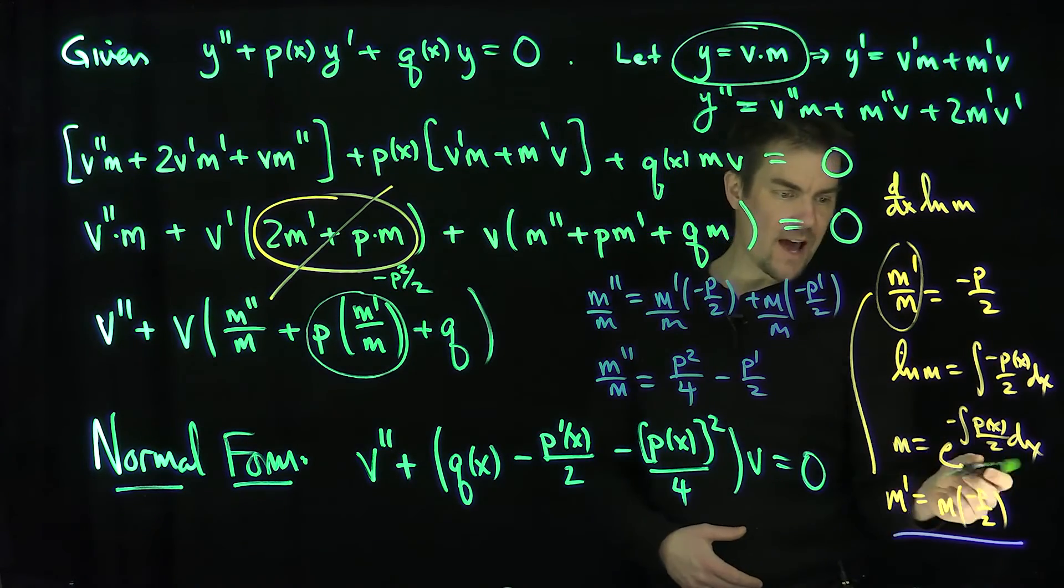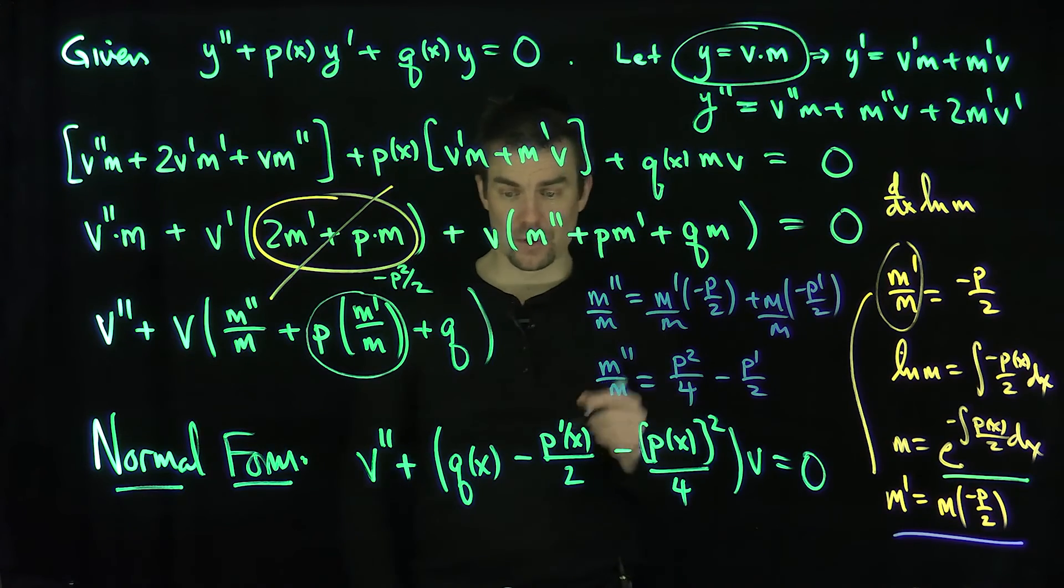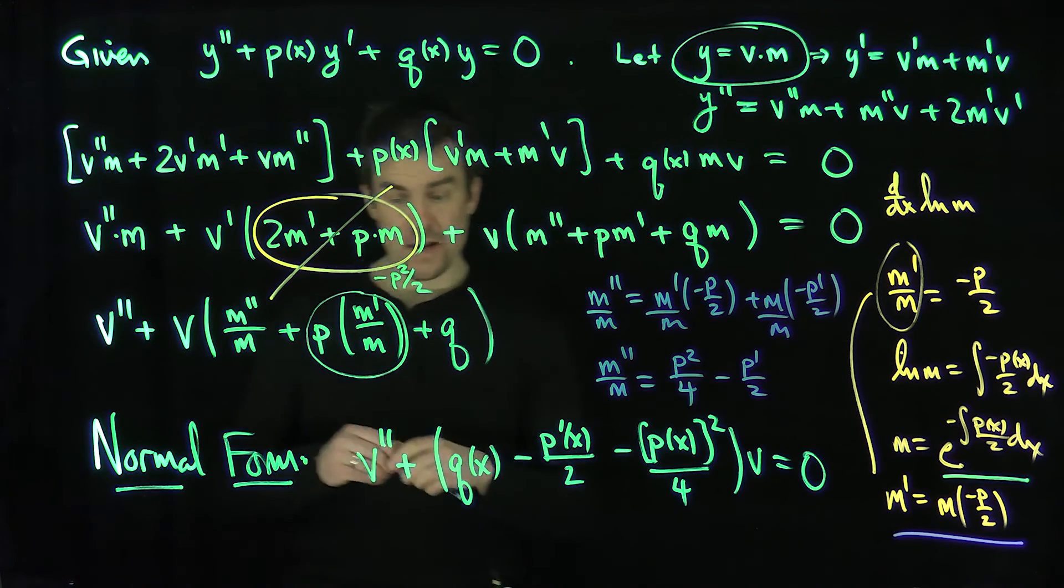Well, v is m times y, where what is m? e is the exponential of negative antiderivative of p over 2. So this is called a normal form of a differential equation.